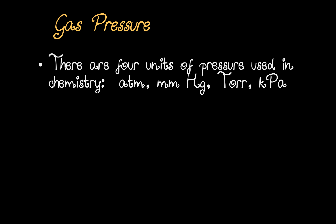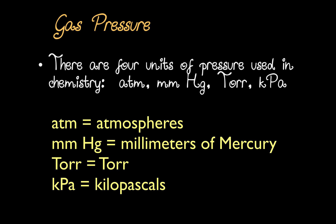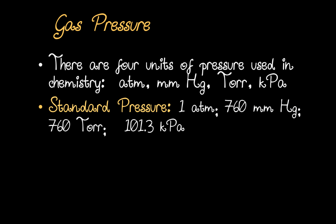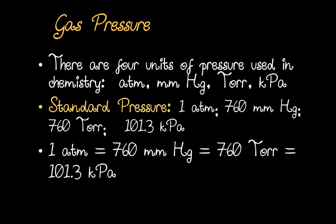There are four units of gas pressure used in chemistry: atmospheres, millimeters of mercury, torr, and kilopascals. Standard pressure is defined as one atmosphere, 760 millimeters of mercury, 760 torr, and 101.3 kilopascals, which means they are equivalent to one another. One atmosphere equals 760 millimeters of mercury, which equals 760 torr, which equals 101.3 kilopascals.